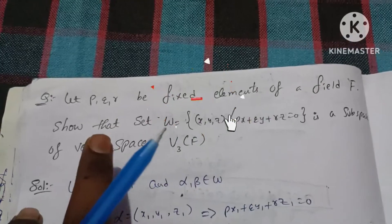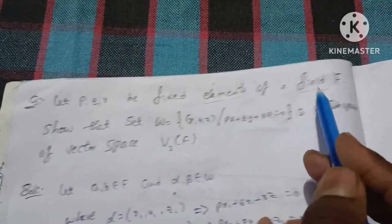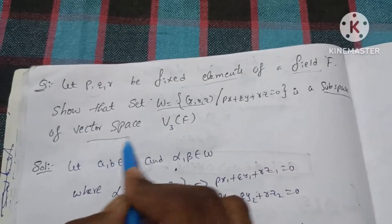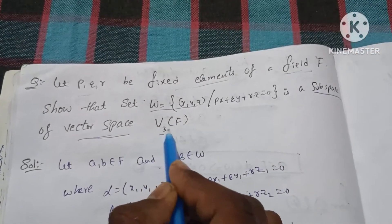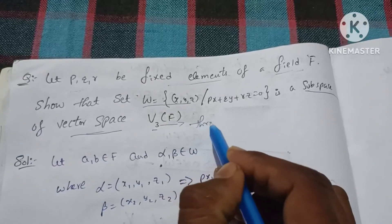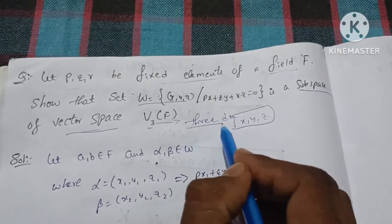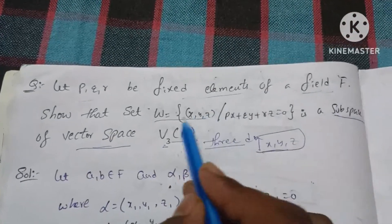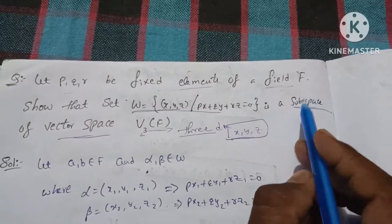In this video, let p, q, r be fixed elements of field F. Show that this set W is a subspace.